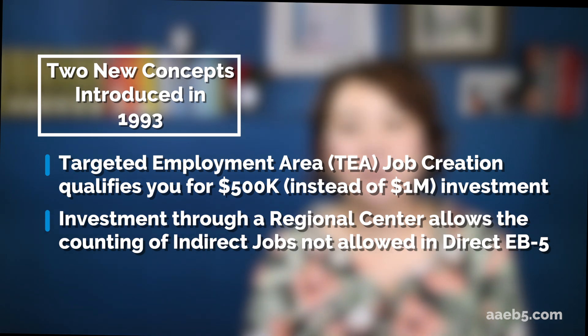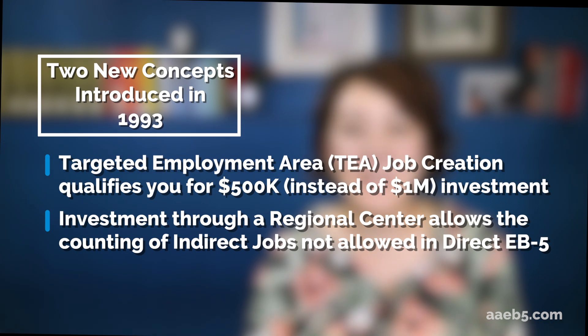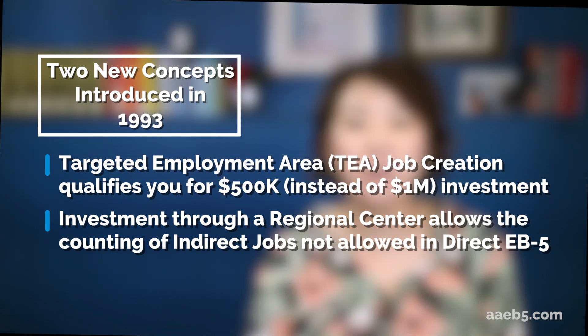The biggest difference between a direct EB-5 project and a regional center EB-5 project is that in direct projects, you need to create and maintain 10 full-time W-2 jobs, while in regional center projects, you're allowed to use the economic impact of the entire project to calculate indirect jobs. The regional center is then allowed to allocate the indirect jobs among different investors, usually in the order the people receive their conditional green cards. This allows a project to have many more jobs than counting only W-2 workers, which is why regional center projects tend to be larger than direct EB-5 projects.